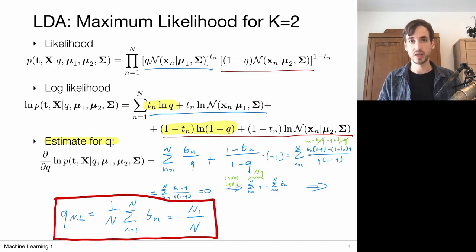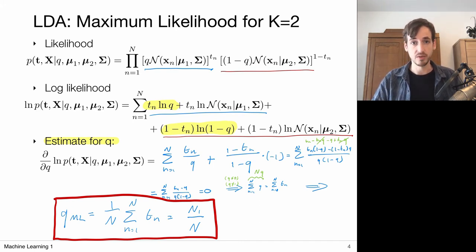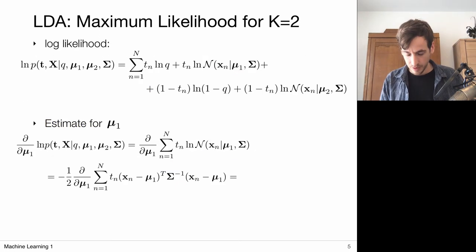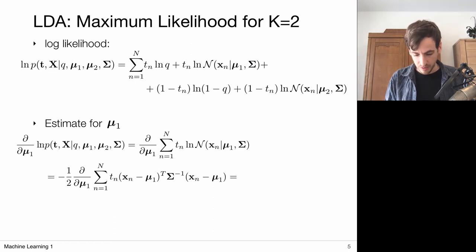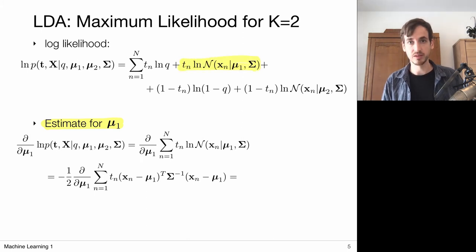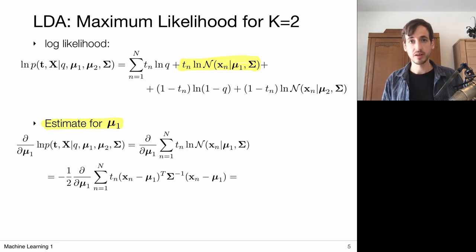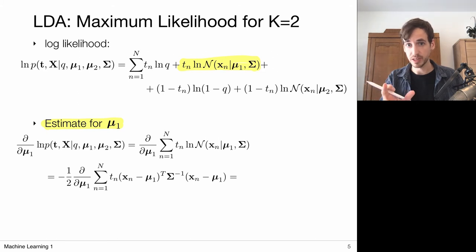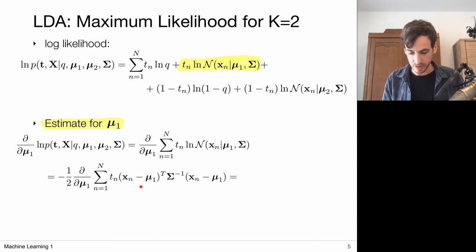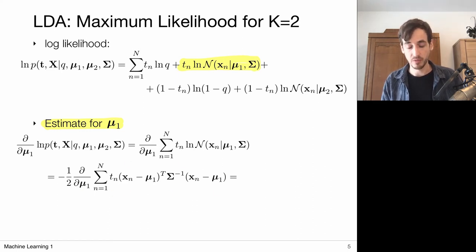The maximum likelihood solution for q is the fraction of times we observe class 1, which is exactly what q represents: the prior probability of observing class 1. Following the same recipe for mu_1, we focus on the term containing mu_1 and compute the derivative of t_n times the log of the Gaussian distribution with respect to mu_1.